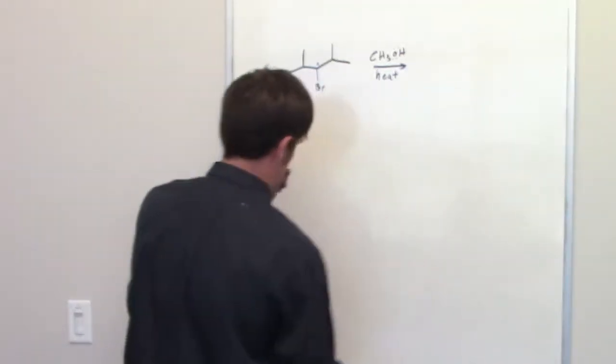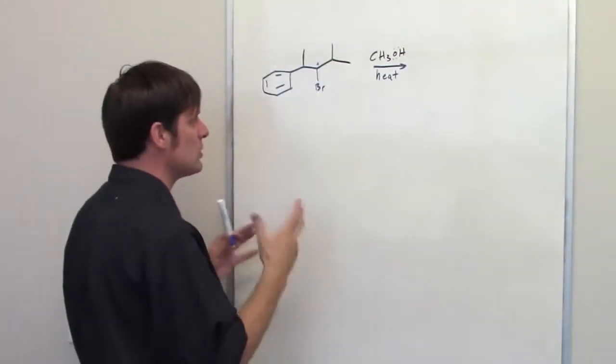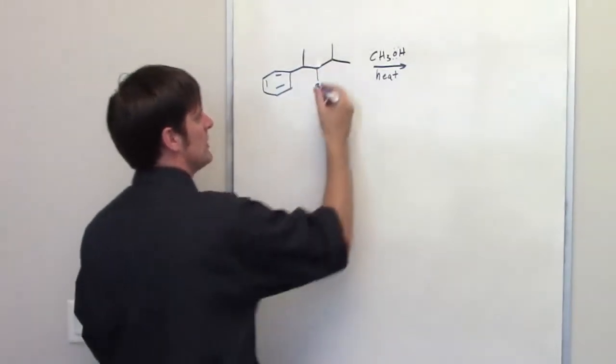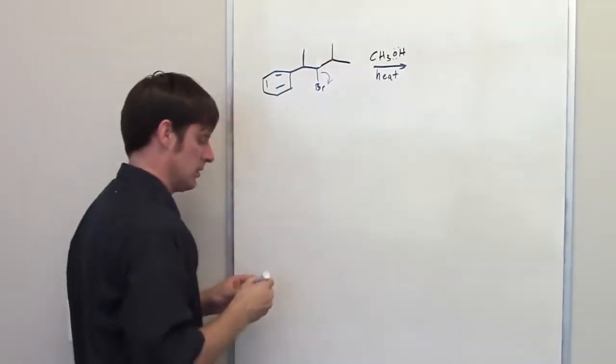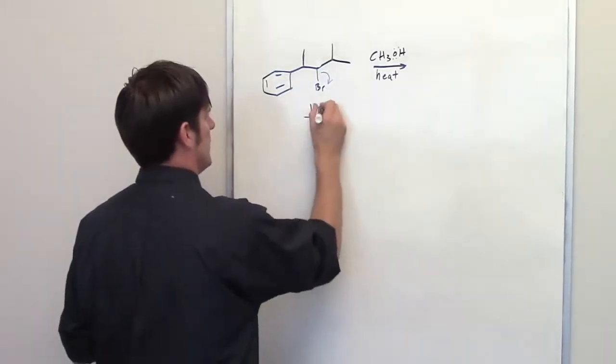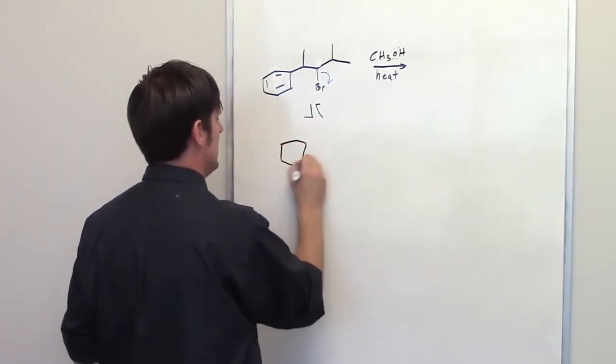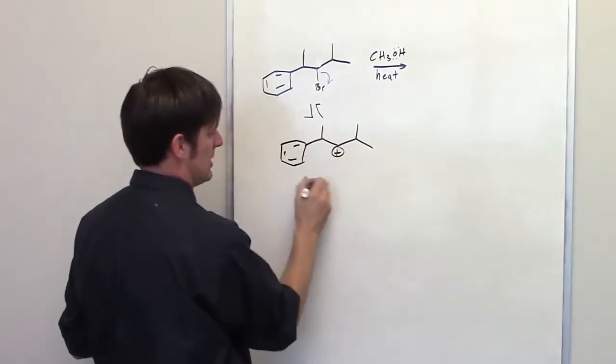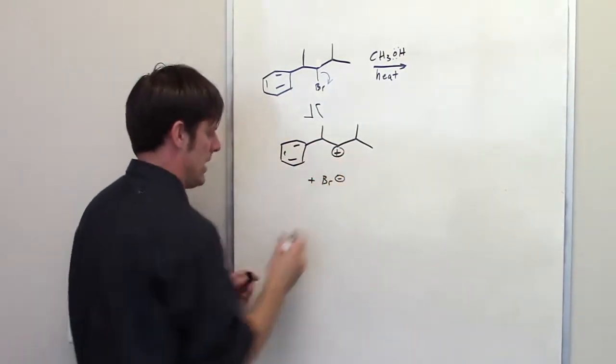As you should remember, an SN1 reaction proceeds by first of all having the leaving group take off. Now, if you don't remember that, I'll go ahead and post a link here. Leaving group takes off. That gives me a carbocation, the positive charge at that position. I've got my bromide walking away.